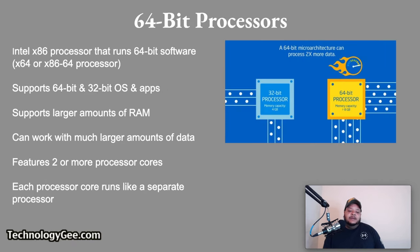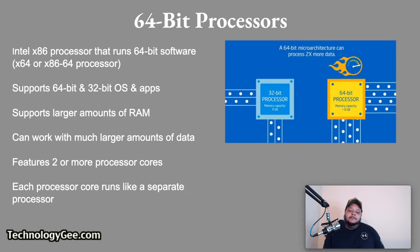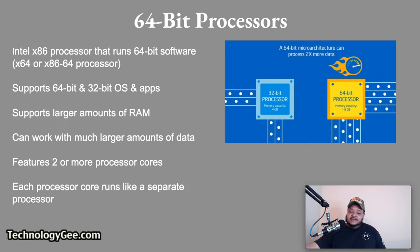A 64-bit processor — an Intel x86 processor that also runs 64-bit software — is also known as an x64 or x86-64 processor. It supports both 64-bit and 32-bit operating systems and apps. A 64-bit processor supports much larger amounts of RAM than a 32-bit processor and can work with much larger amounts of data at the same time. Most 64-bit processors also feature two or more processor cores, each of which runs like a separate processor.